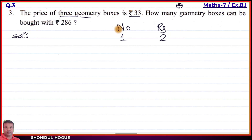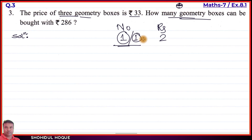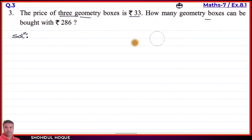The question asks: how many geometry boxes can be bought? We set up the equation. The cost of three geometry boxes equals rupees 33. We write this on the left side and set up the equal symbol.